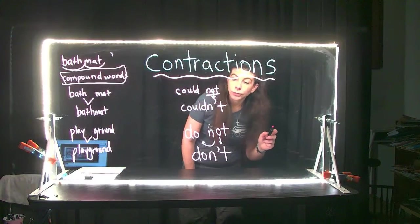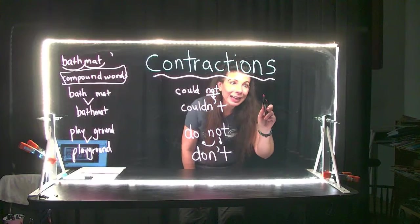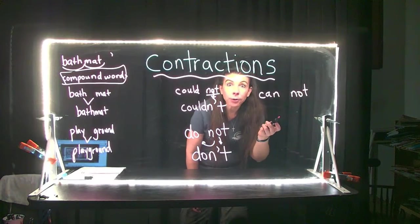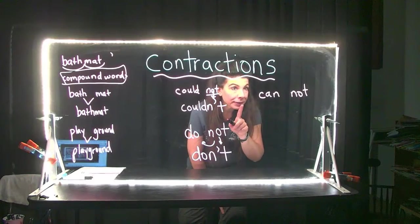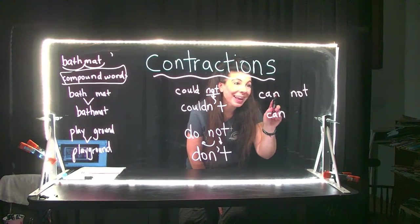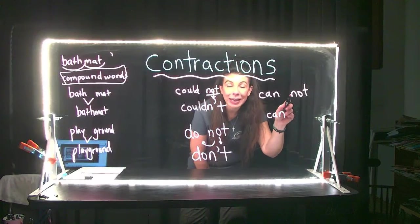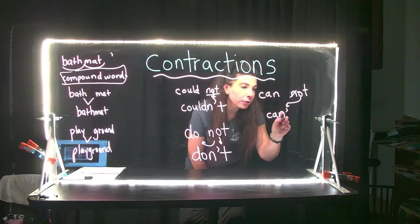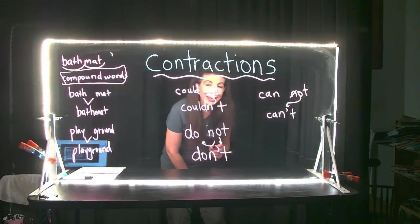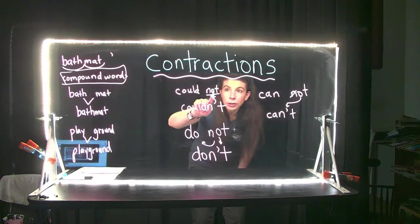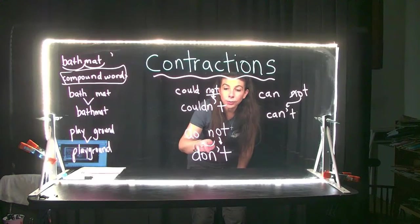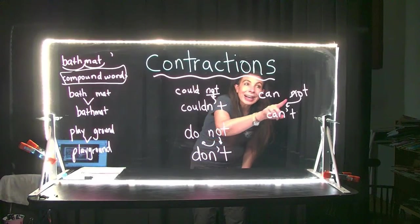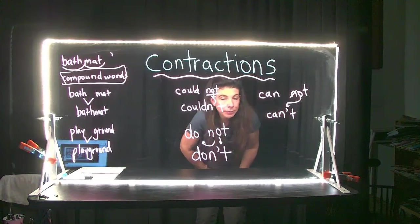Can't: 'I cannot come' becomes 'I can't come.' Now in this case, because I already have an N, I'm not going to put another N. So the extra N goes away, the O becomes the apostrophe, and then you have the T. Can't. So in 'couldn't' the O becomes the apostrophe; in 'don't' the O becomes the apostrophe; in 'can't' we lose an N and the O becomes the apostrophe.